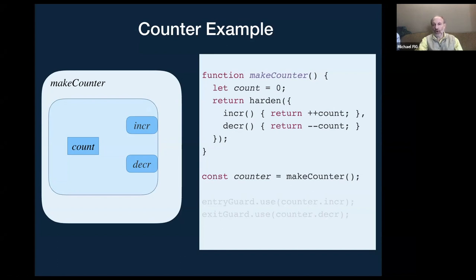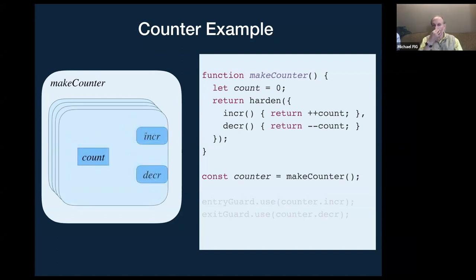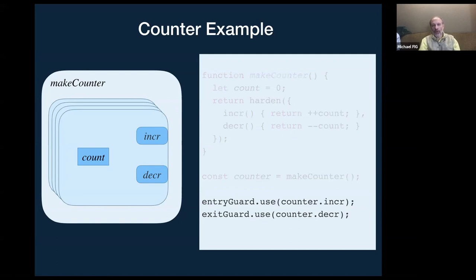So every time we call it, we make a new triple of an inker function, a decker function, and encapsulated count variable and the record exposing the inker function and decker function. The harden is an abstraction over object.freeze, so the record itself cannot be tampered with. And every time we call it, we make a new instance where each of these instances is isolated from the other. With one of these counters with an inker and a decker, you can, for example, if you want to count the number of things entering and exiting a container, you could have an entry guard guarding the entrance to the container and exit guard guarding the exit to the container, and give the entry guard the ability to increment and give the exit guard the ability to decrement.